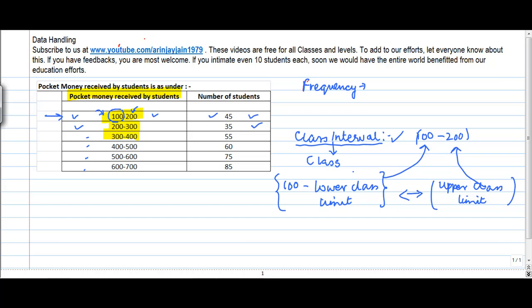So the lower class limit represents the starting point of a particular class whereas the ending point or the upper class limit represents the point where the class ends. So there is a concept of width also known as size of the class.